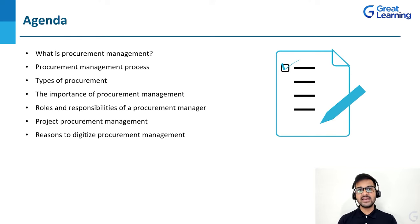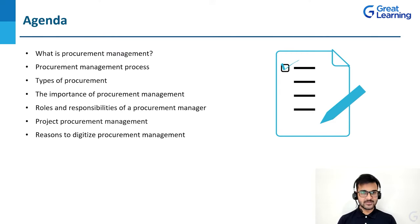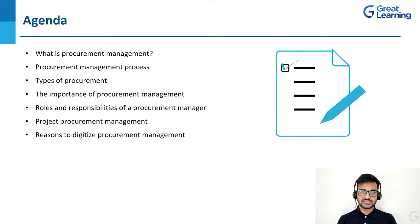There are three types of procurement: direct, indirect, and services procurement, and we will understand more about that with examples. Then we'll cover the importance of procurement management, roles and responsibilities of a procurement manager, and project procurement management — what exactly is the role of procurement for a particular project. At the end of this course, we will be talking about the software aspect of procurement management and how different types of software can make the process very efficient and effective. So let's get started.